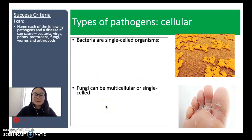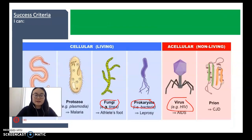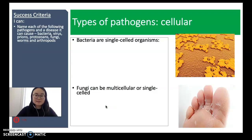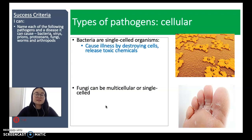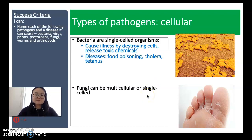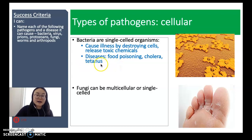There are different types of pathogens and we're going to start with the living ones on the left. Let's start with bacteria. Bacteria are single-celled organisms. They cause illness by destroying cells and releasing toxic chemicals. We can see lots of bacteria growing on this surface — each of the yellow spheres. Some examples of diseases caused by bacteria include food poisoning, cholera, and tetanus. You might know that you have been vaccinated against tetanus.